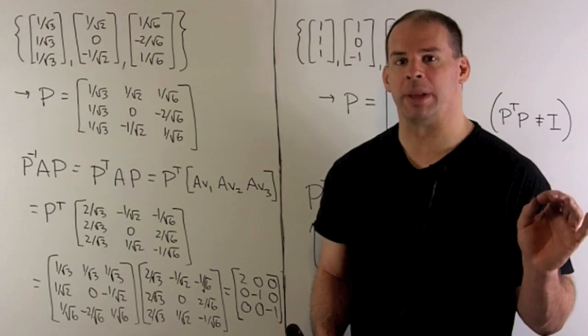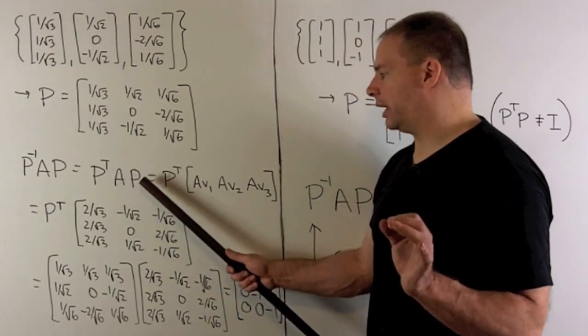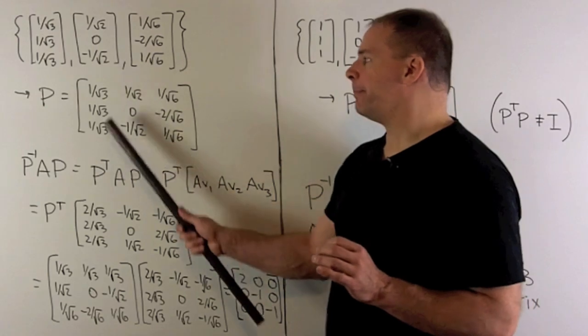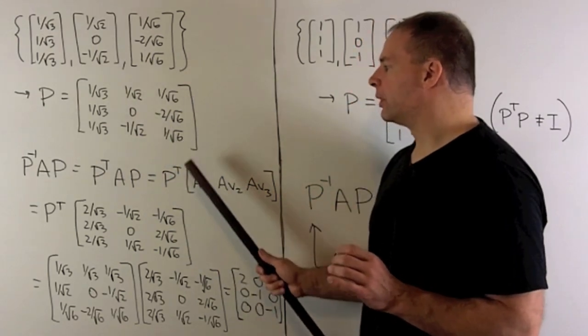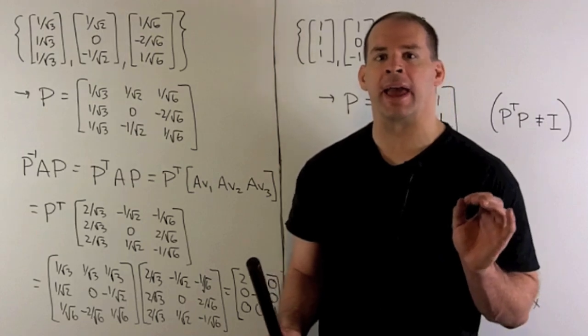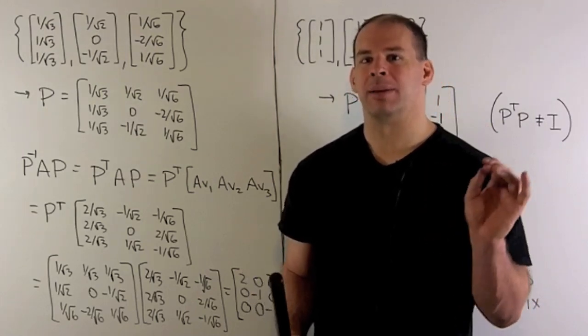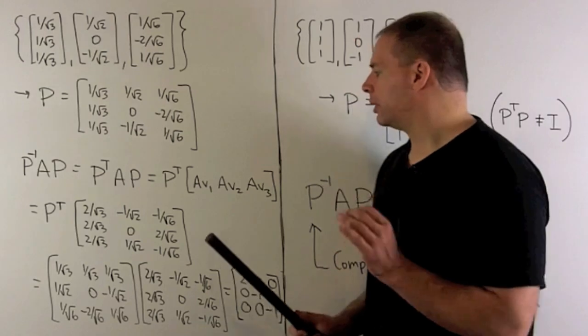I also have a trick for multiplying A times P. For A times P, note that the columns of P are all eigenvectors. If I multiply by A, I'm really multiplying each column vector by A. Since they're eigenvectors, we just multiply each column by the eigenvalue.